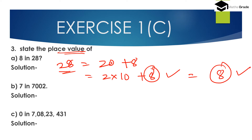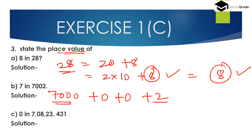Part B: find the place value of 7 in 7,002. The expansion of 7,002 is 7,000 plus 0 plus 0 plus 2. So 7 is in the thousands place and 2 is in the ones place. Therefore, the place value of 7 is 7,000.